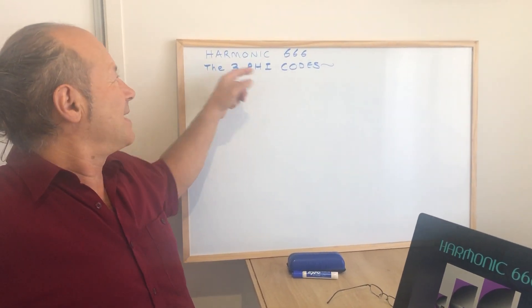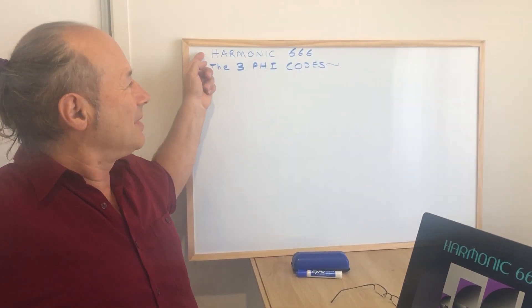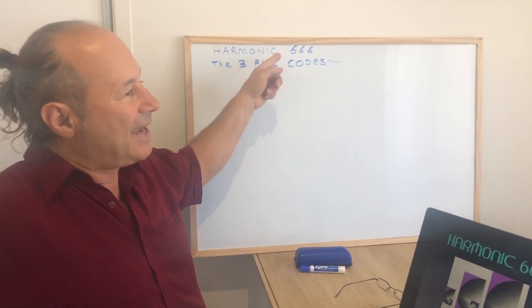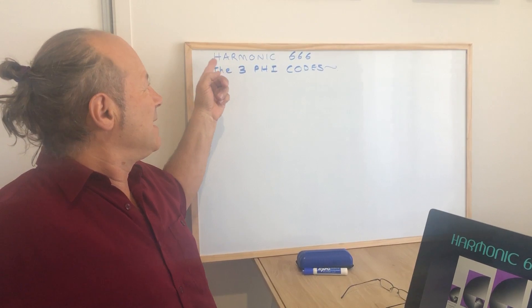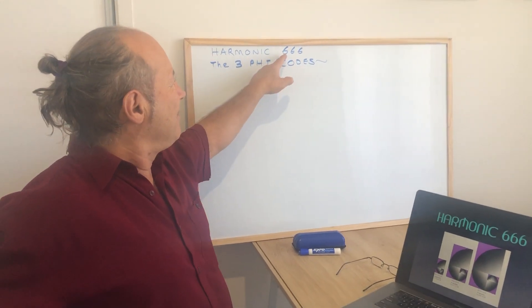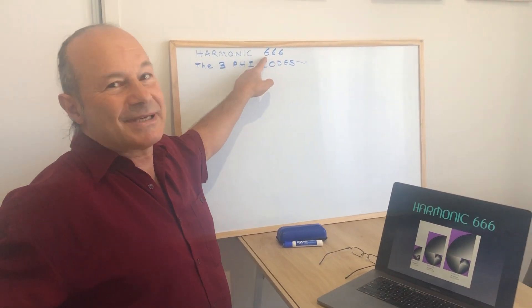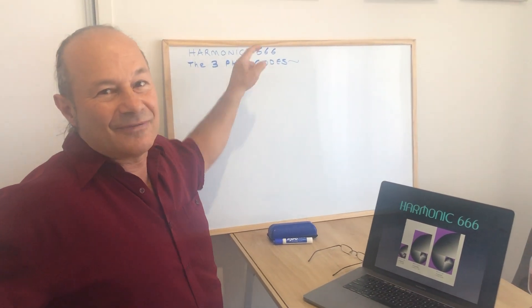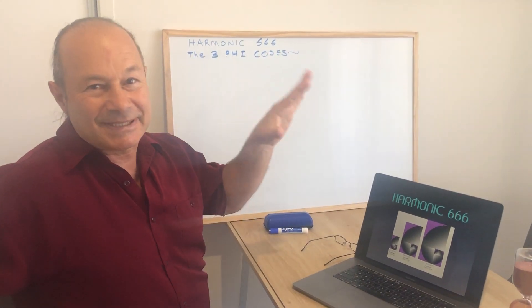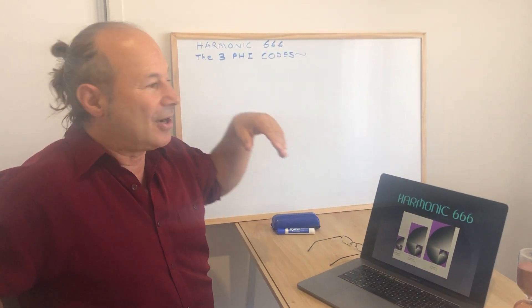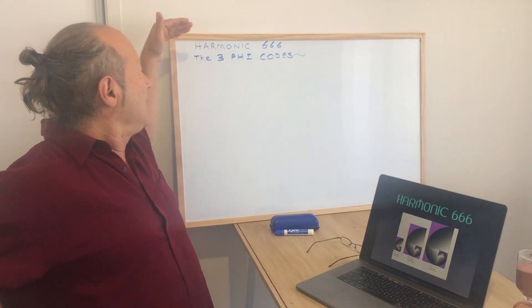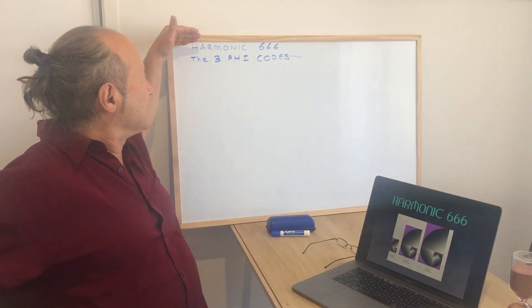This is going to lead to an understanding of how we derive a visual interpretation of this magic number 666. So I'm calling it harmonic 666.